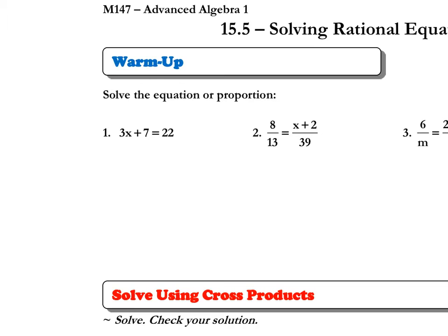So, just a very basic equation to start. We move the 7 over to the other side by doing the inverse operation. We get 3x to equal 15, divide by 3, and x equals 5.